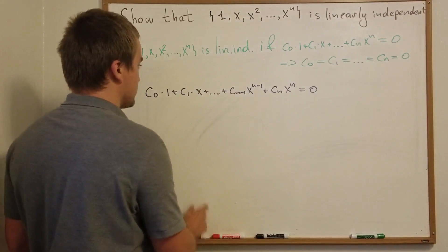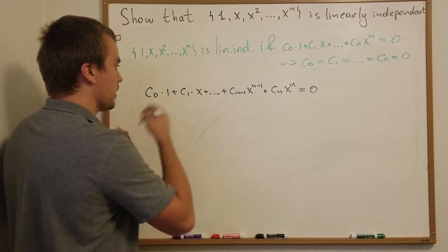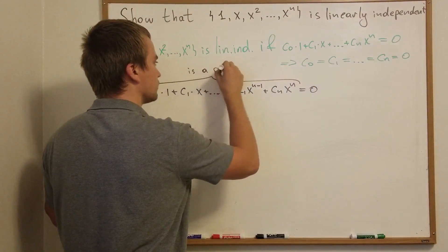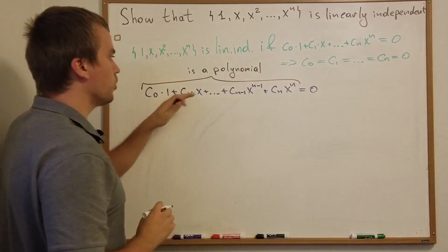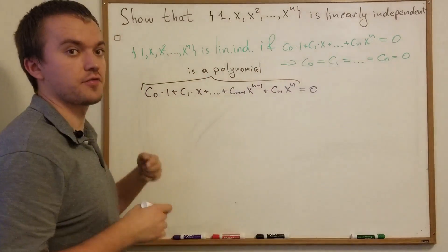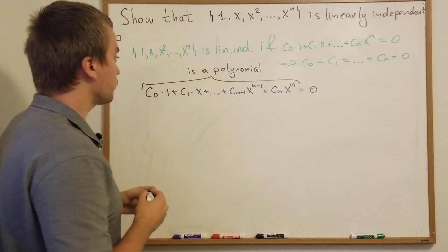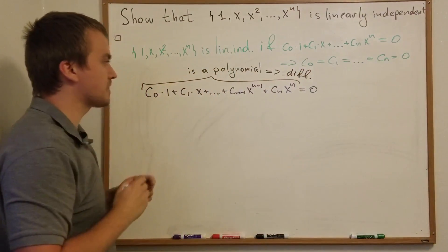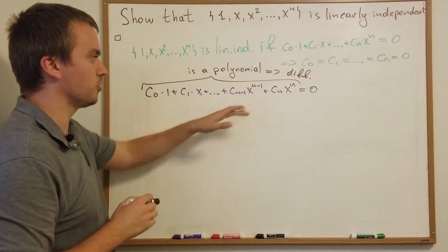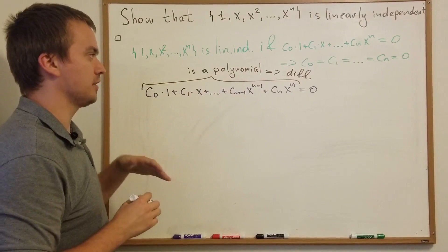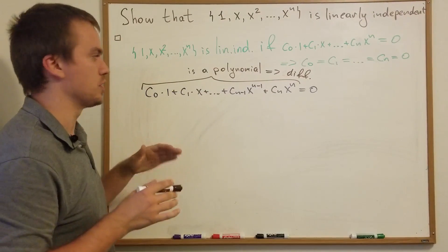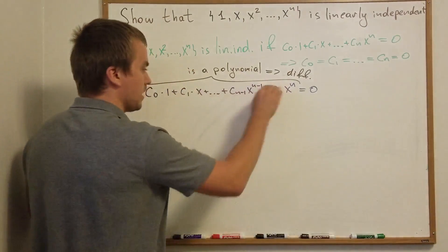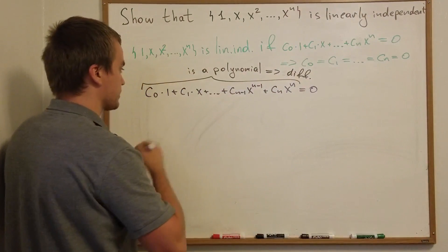If we take a look at the left-hand side, we can see this is a polynomial. And what we know is that polynomials are differentiable — in fact, how many times can I differentiate this polynomial? I can differentiate it as many times as I want, so it's infinitely differentiable. So let's take this equation and differentiate with respect to x.